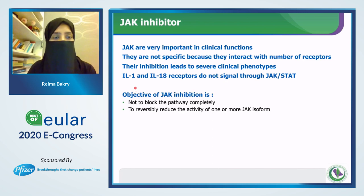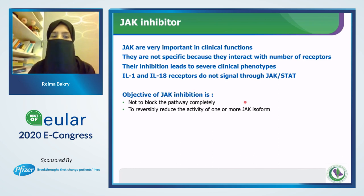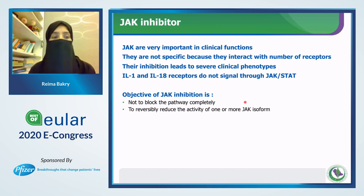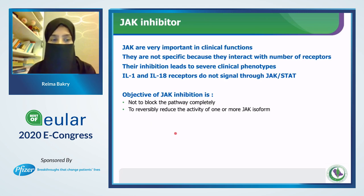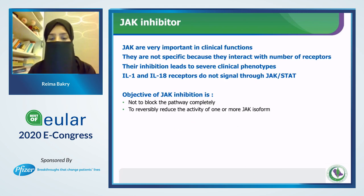JAK inhibitors are another option. They are not specific because they interact with a number of receptors, and their inhibition leads to severe clinical phenotypes in humans and animals. IL-1 and IL-18 receptors do not signal through JAK inhibitors. The objective of JAK inhibition is not to block the pathway completely, but to reduce the activity of one or more JAK isoforms.